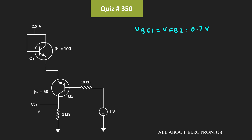To find this voltage VC2, first of all we should know the collector current IC2. And to know this current, first of all we should know the base current IB2. We can find this current if we know the voltage at this node — in other words, first we should know the voltage VB2. Once we know VB2, we can easily find IB2, and from that we can find IC2, and with IC2 we can easily find the voltage VC2.